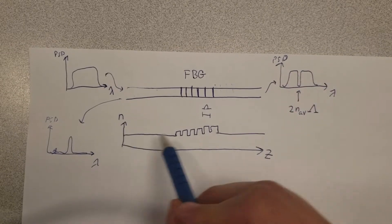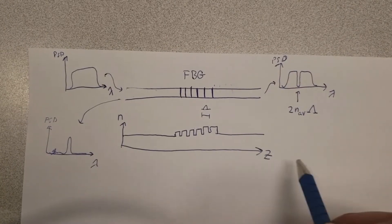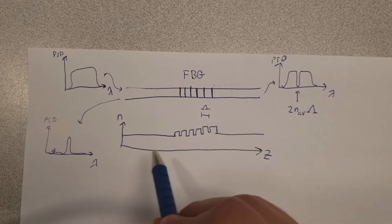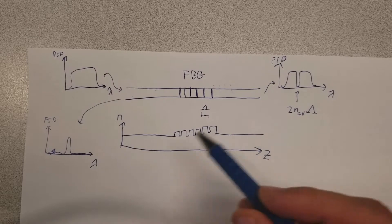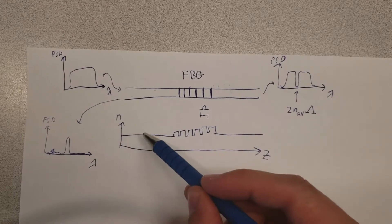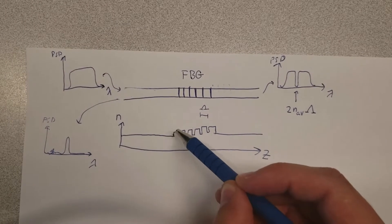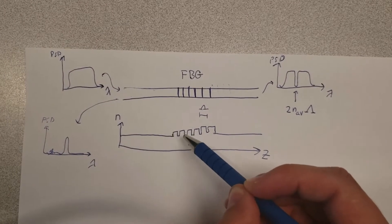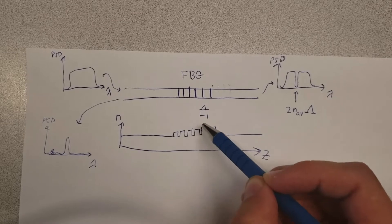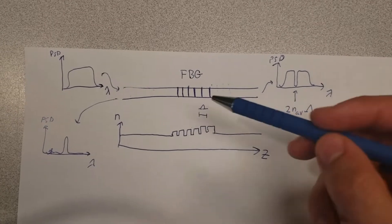If we look at this chart, here we have the direction along the length of the fiber on the z-axis, and here we have a chart of the refractive index. There are going to be these periodic increases and decreases in the refractive index.